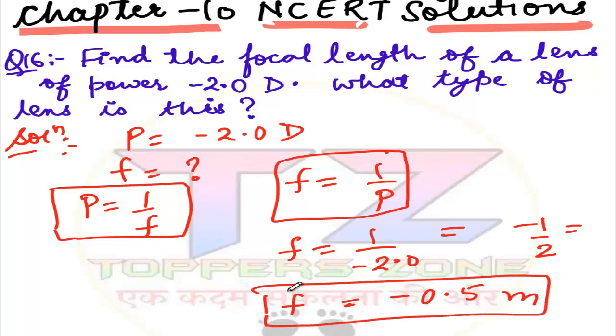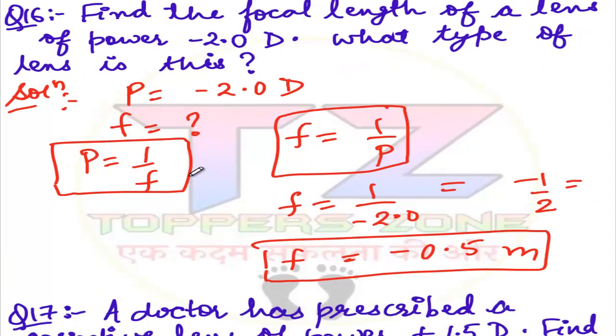So it was very simple. Now we have asked here what type of lens is this. We have to see - focal length is negative, which means we have a concave lens. So here we will write the type of lens is concave lens, because focal length of concave lens is negative.